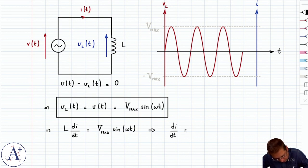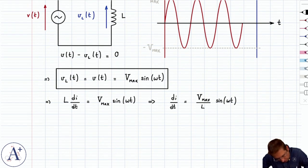So di/dt is going to be Vmax divided by L sin(ωt), and if we integrate that, i(t) is going to be equal to Vmax divided by L...